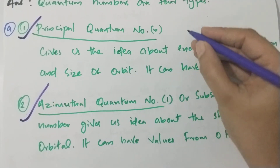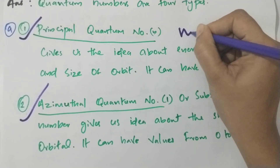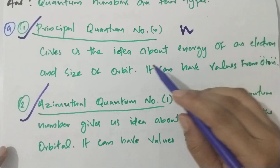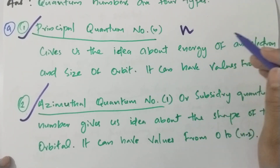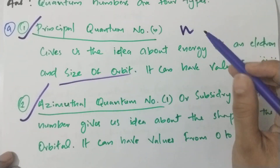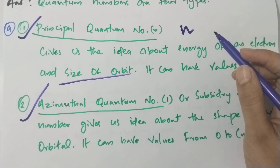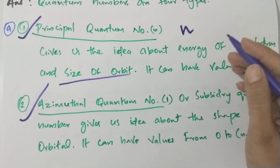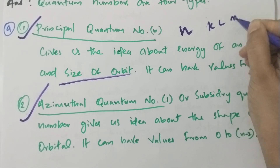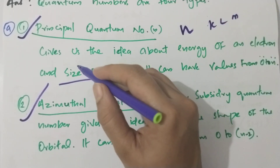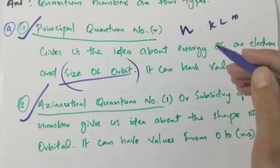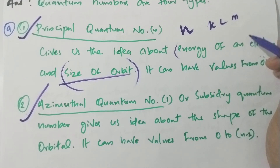The principal quantum number is n. It gives an idea about the energy of the electron and the size of the orbit. For any orbital — K, L, M — it gives an idea of the energy of the electron.